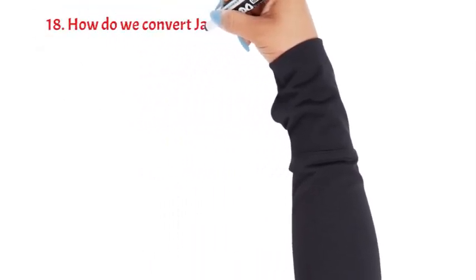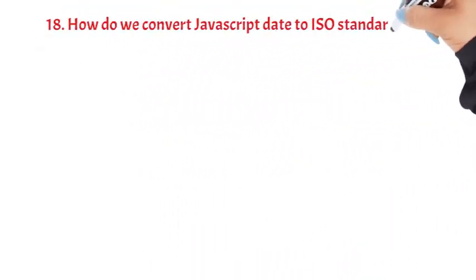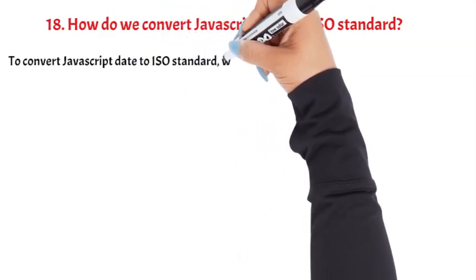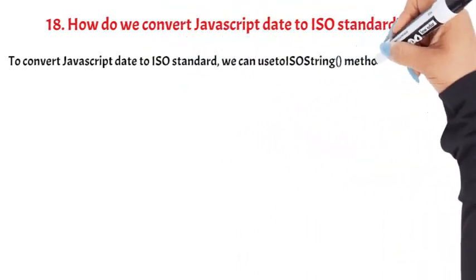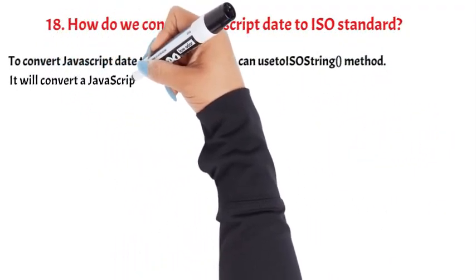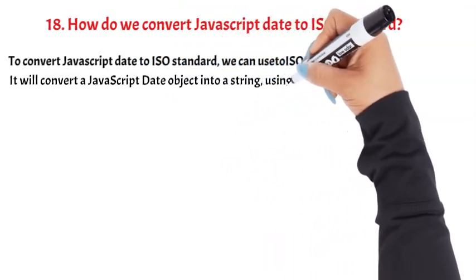How do we convert JavaScript date to ISO standard? To convert JavaScript date to ISO standard, we can use the toISOString() method. It will convert a JavaScript date object into a string using the ISO standard.